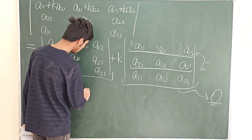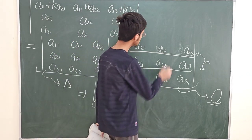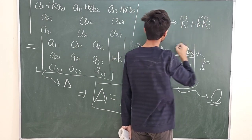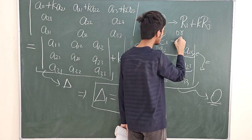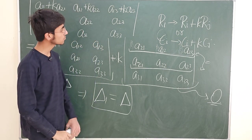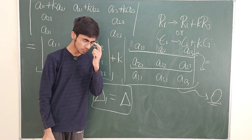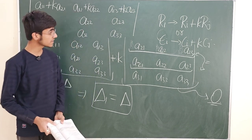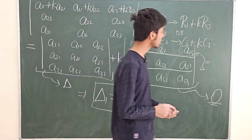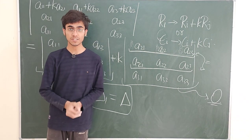Therefore the new determinant after the operation Rᵢ → Rᵢ + k·Rⱼ equals delta₁ + 0 = delta, the original determinant. The value does not change. This is a very useful property for solving determinants: instead of doing a full expansion directly, you can simplify the determinant first using this operation and then expand to get a much simpler result. We have now discussed all 6 properties as given in CRT. We'll continue with exercise 4.2 in the next video. Thanks to you all.